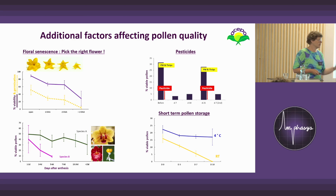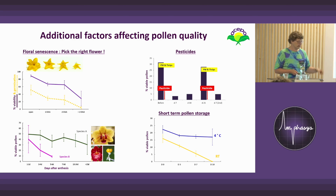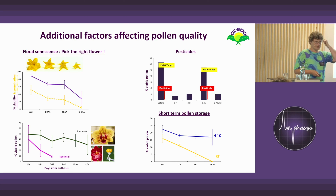For short-term pollen storage, it should almost always be kept in the fridge and never at room temperature. There are some breeders who take their frozen pollen vials and just put them behind their ear — that's not a good idea.